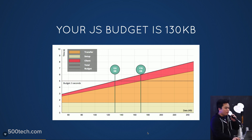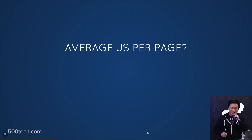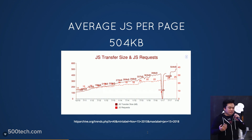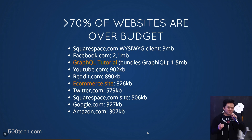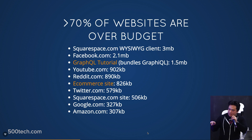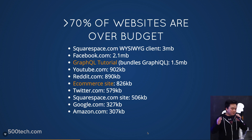So how big is 130 kilobytes? The average JavaScript per page is 504 kilobytes — keep in mind your performance budget is 130 kilobytes — and it's going up every single year. Even among top websites, 70% are over this basic bare minimum of a five-second load on a global average internet speed. Interestingly, Alex Russell, the expert I quoted, works at Google, and google.com is 327 kilobytes.